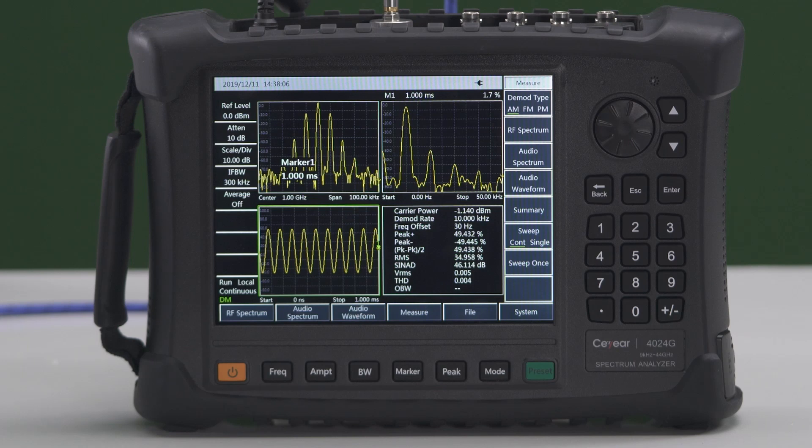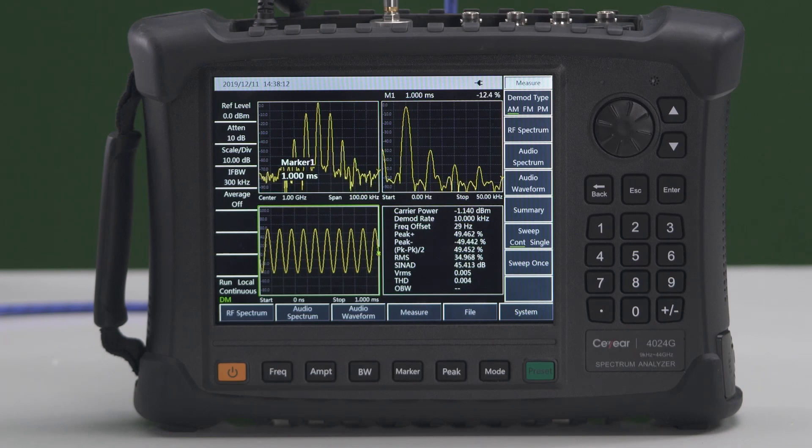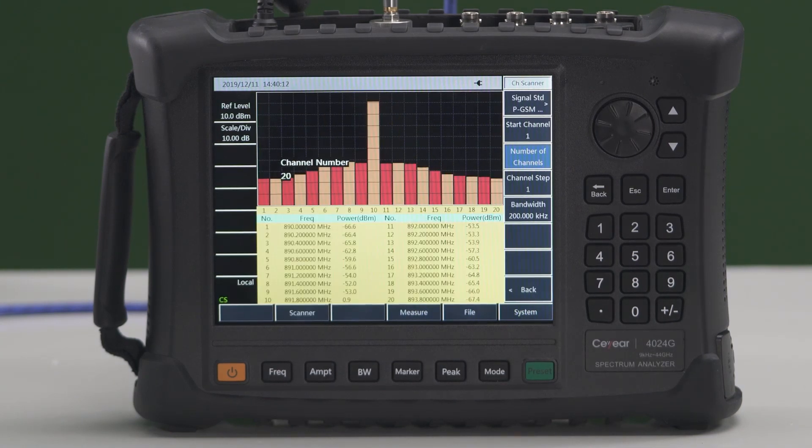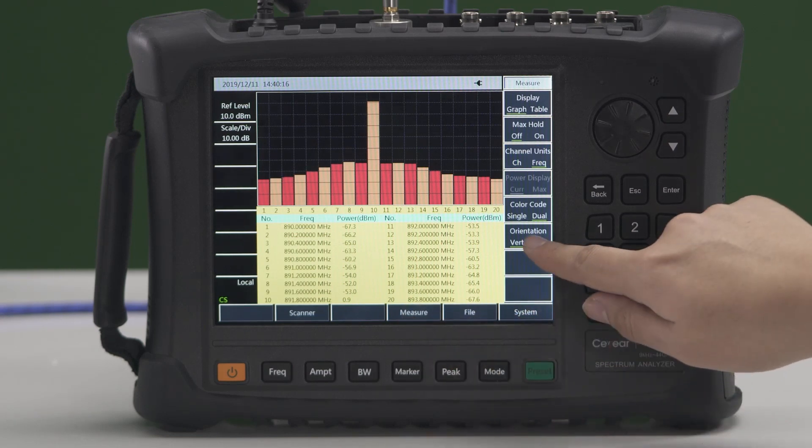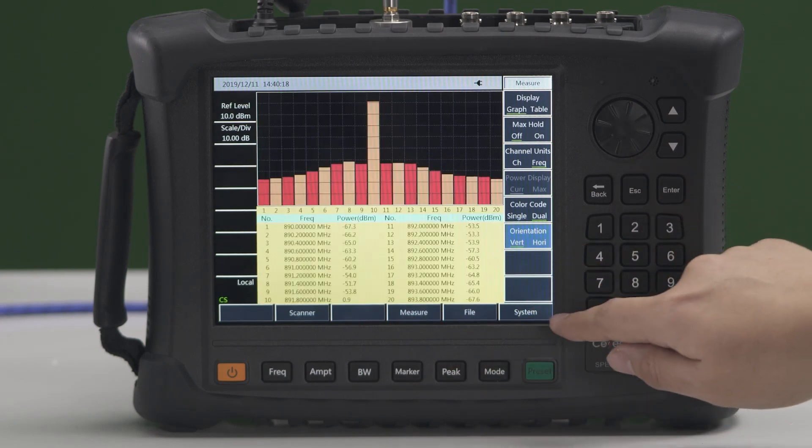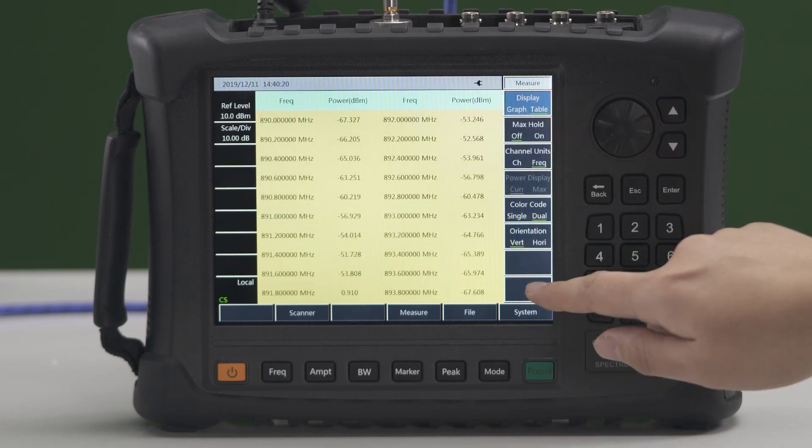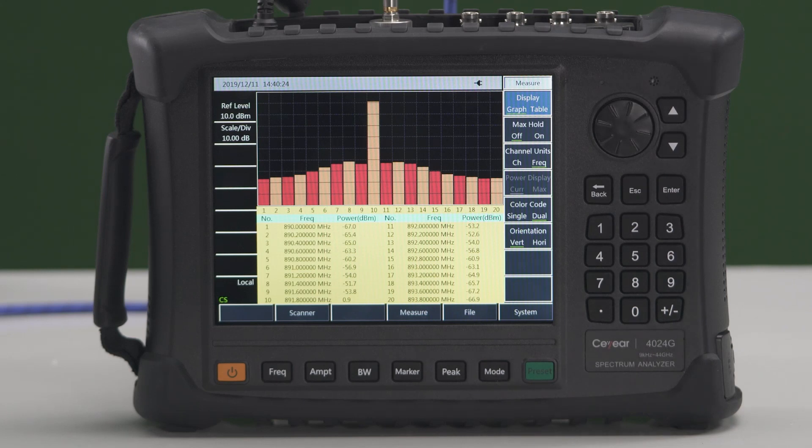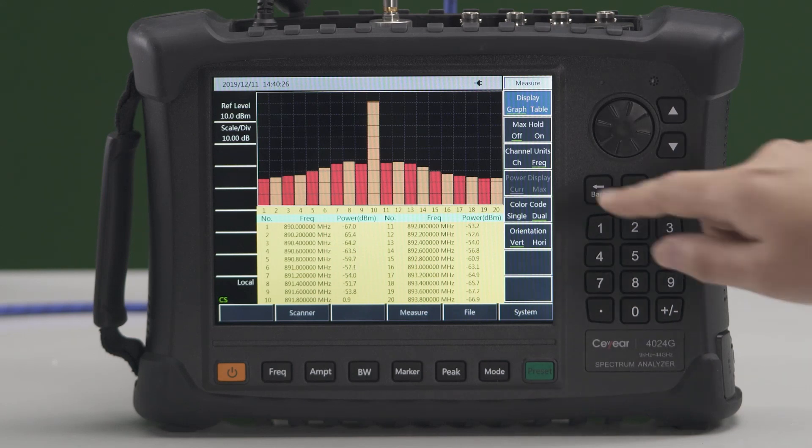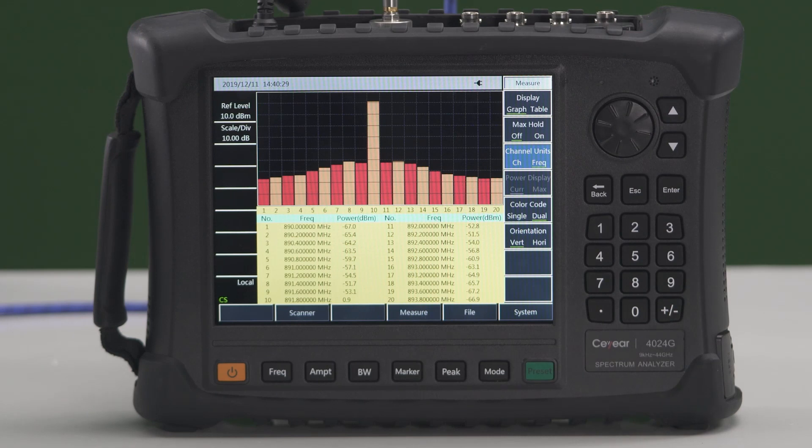In channel scanner mode, C-Year 4024 supports channel power measurement of 396 signal standards and supports user-defined channel power measurement standards. Users can scan by channel or by frequency, and the power information of each channel can be displayed in the form of graphs or tables.